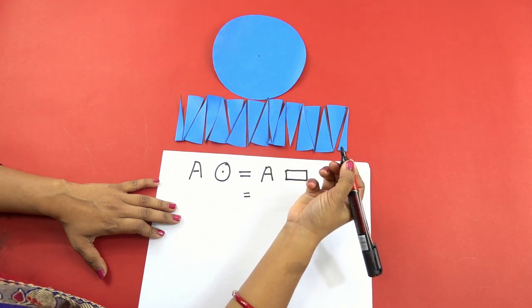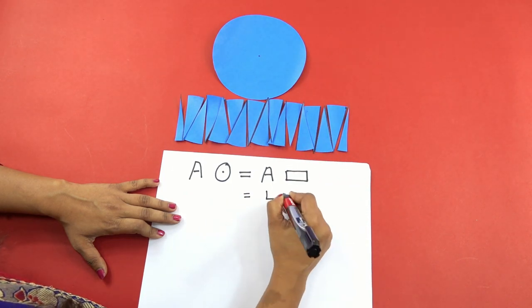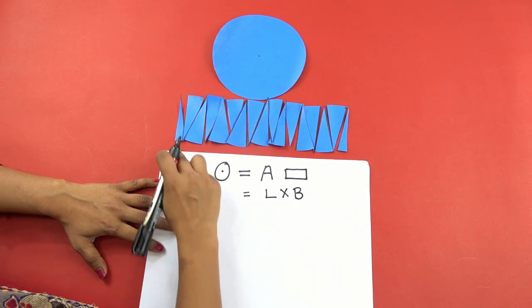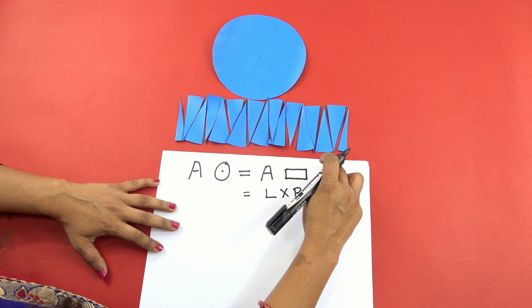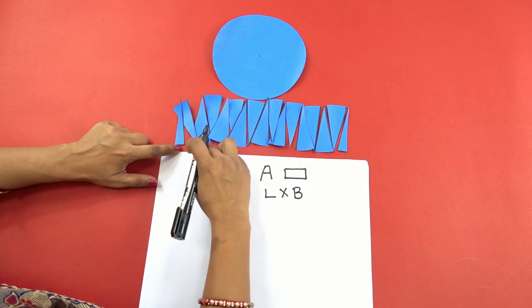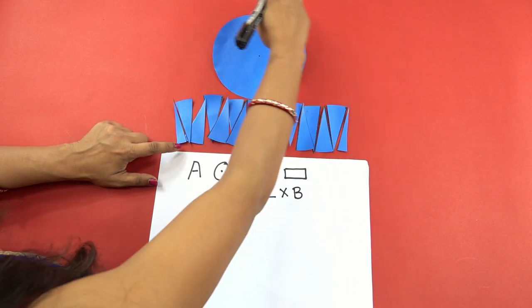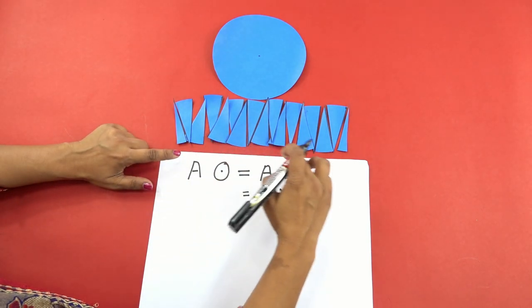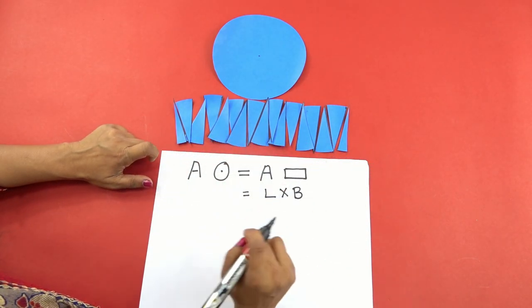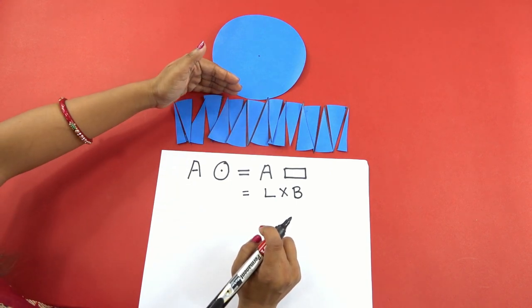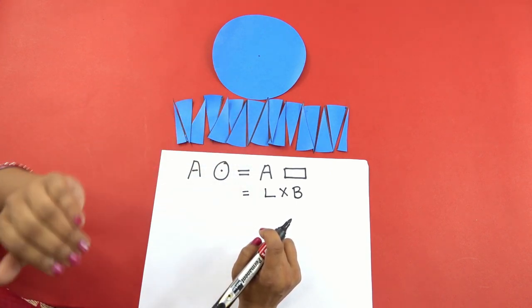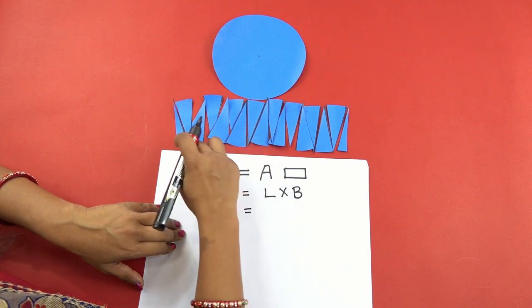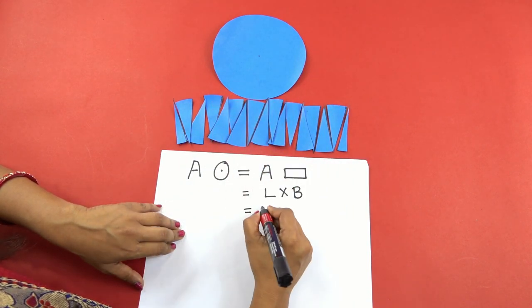Now what is the area of rectangle? Yes, length into breadth. Now what is this length made up of? Think about it. It is made up of the circumference of the circle, but it is the whole circumference half side is on this place and half circumference is on this place. So the length of this rectangle is made up of half of the circumference of this circle.